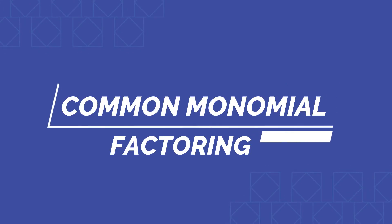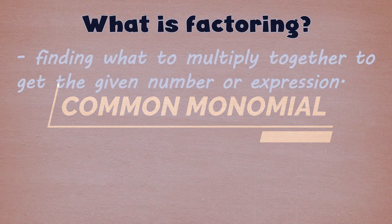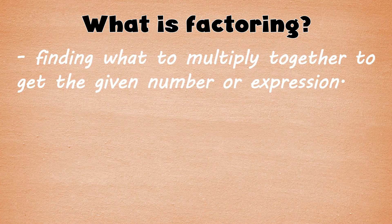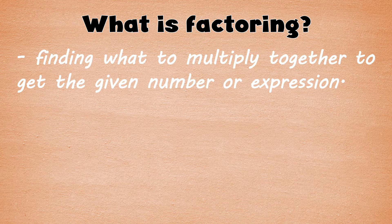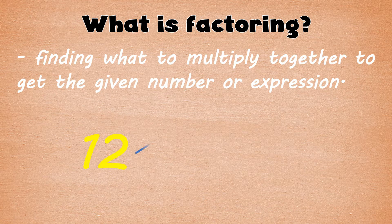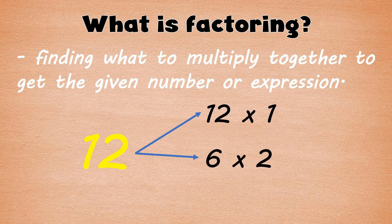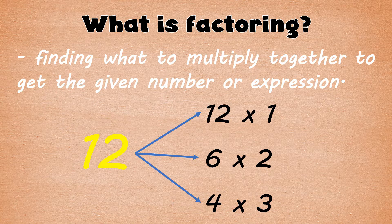Common Monomial Factoring. First, what is factoring? It is about finding what to multiply together to get the given number or expression. Factors of 12, for example, are 12 and 1, 6 and 2, and 3 and 4. All of these pairs of factors are equal to 12.